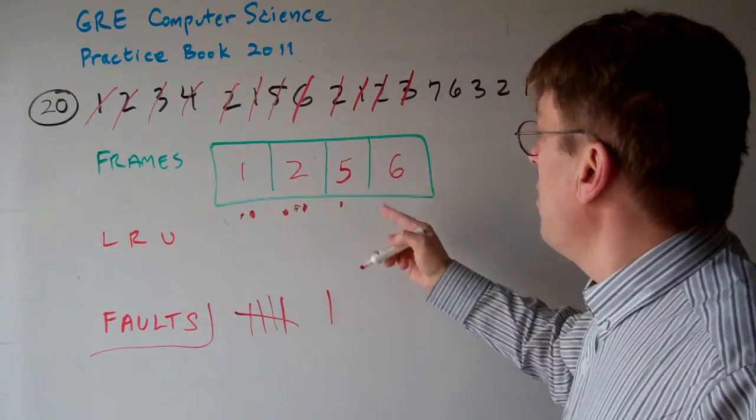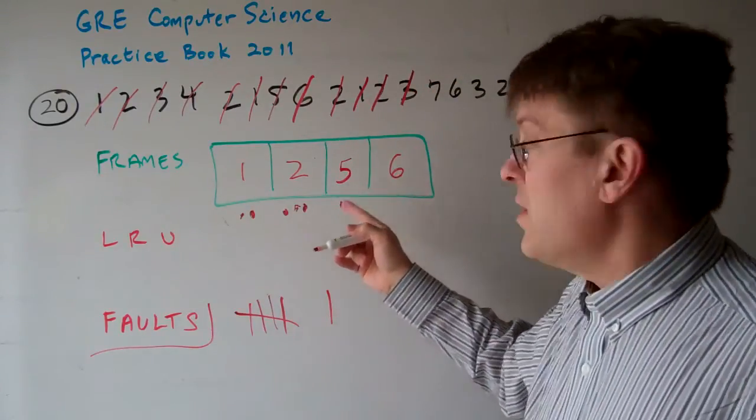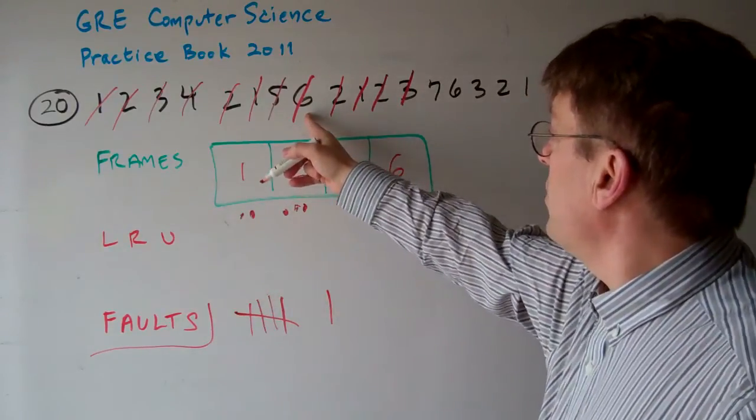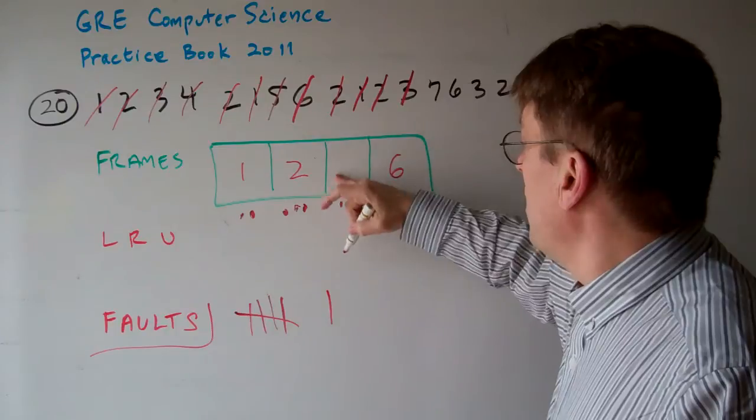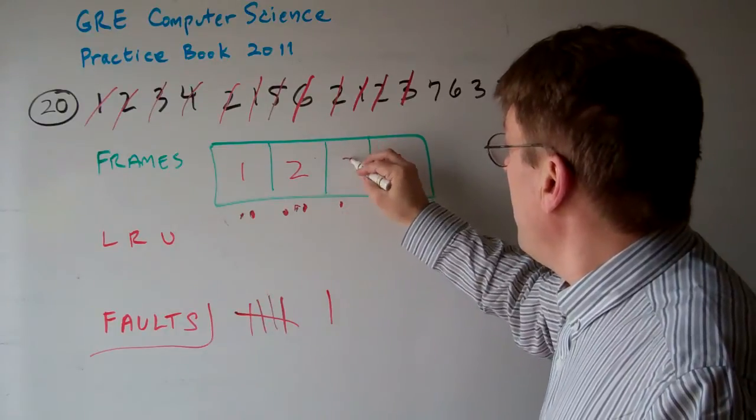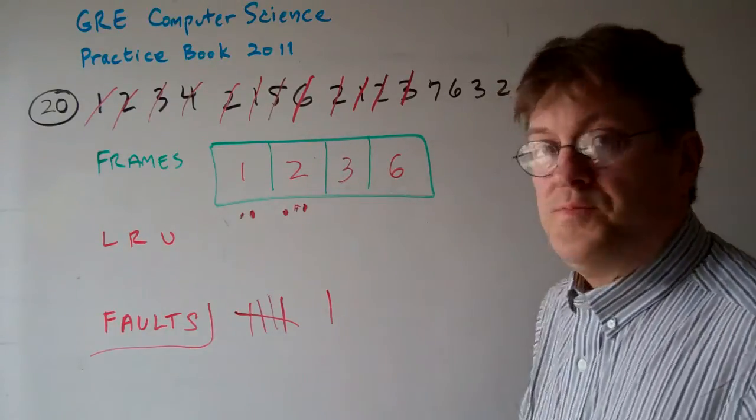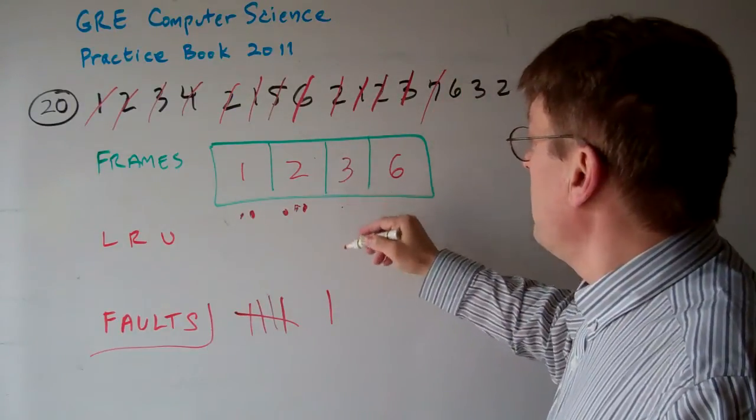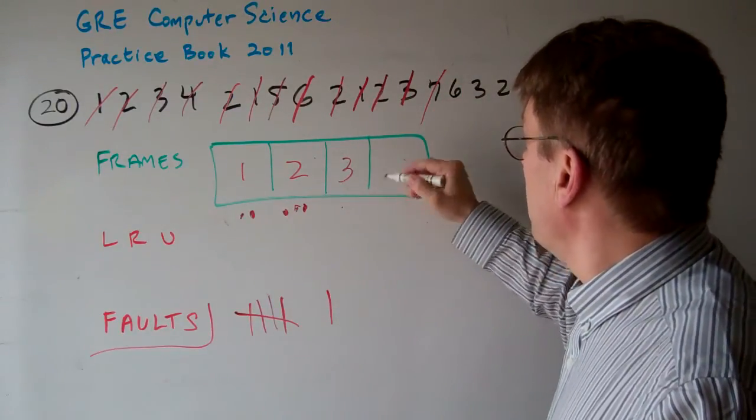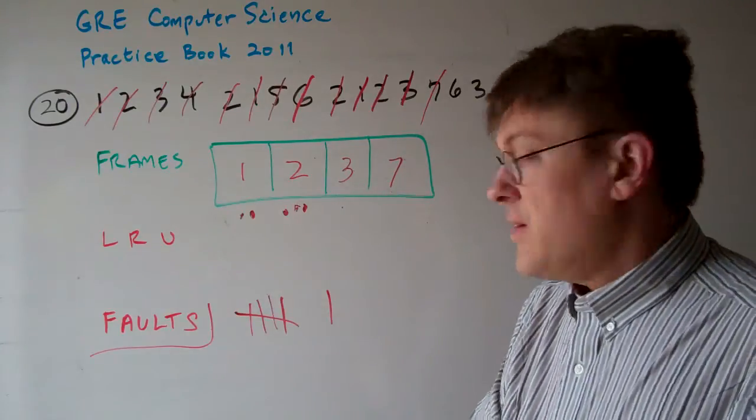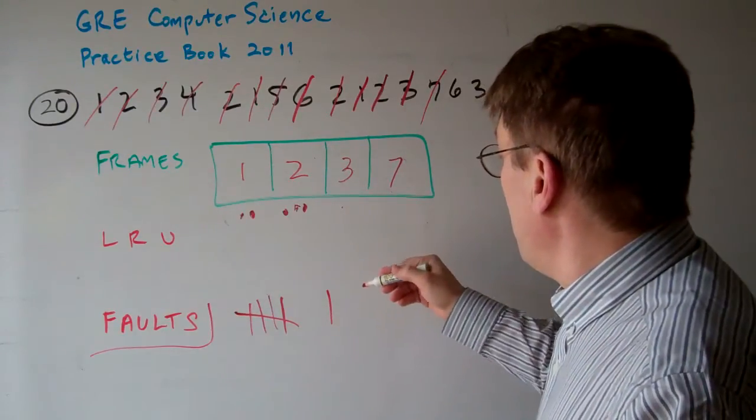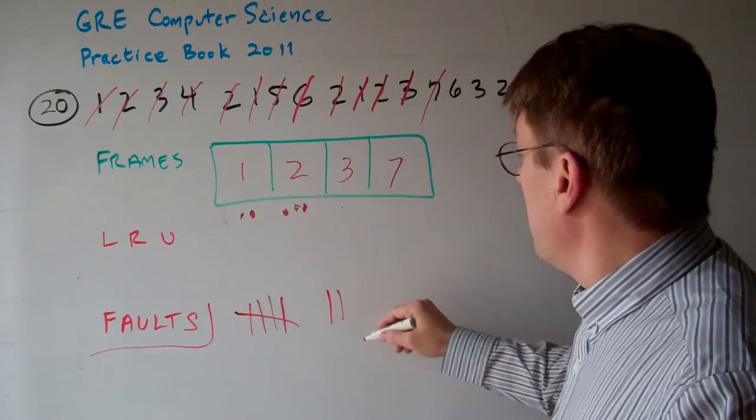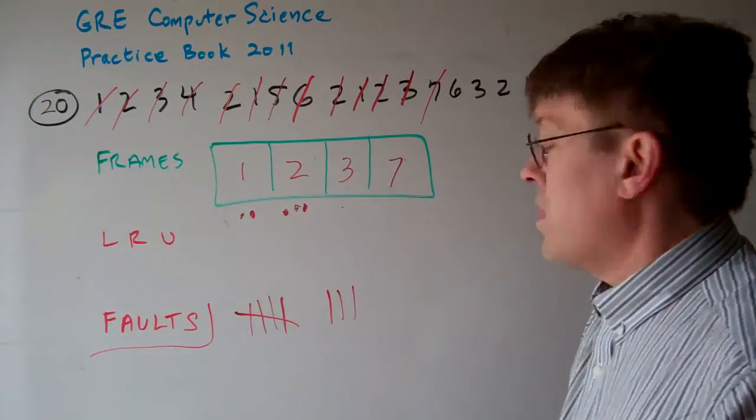Now three, we have to replace whichever one was least recently used. Obviously, one and two were just used. Six was used. Five is the oldest one. So the three replaces the five. Now seven comes into play. Well, the three is the most recently used one. Six obviously is the one that gets replaced by the seven. And I think I missed the three and the seven.